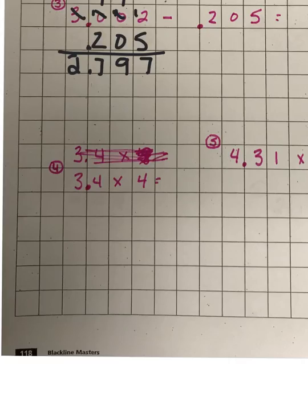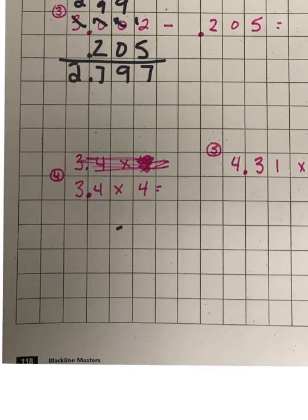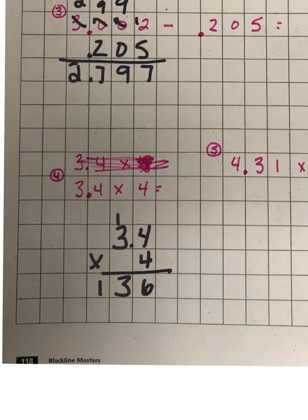For the fourth question, you're not lining up the decimals — that's not what you're worried about. You are just multiplying, so you multiply like normal. Then you count the number of digits to the right of the decimal in the question. In this one, there's one number to the right of the decimal, which means you have to have one number to the right of the decimal in the answer. And it goes right there.